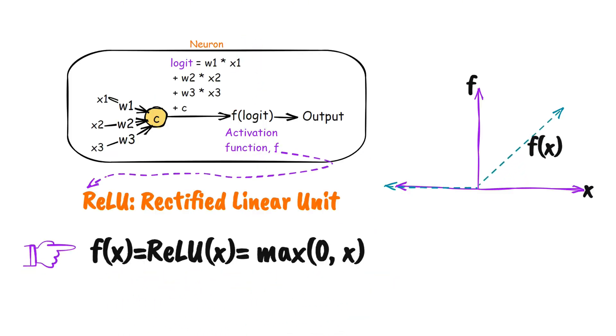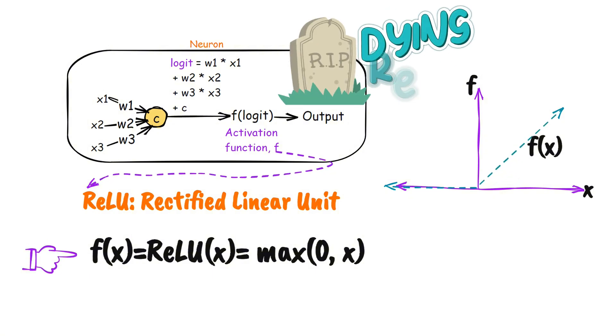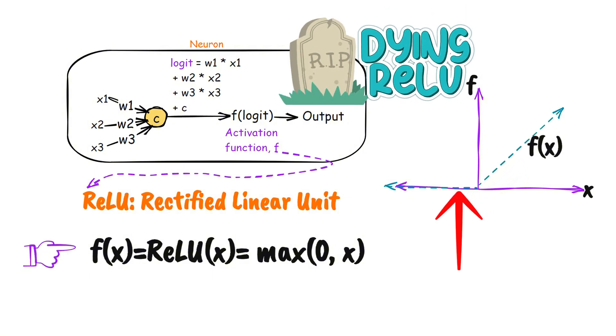ReLU also has a major drawback. It can suffer from dying ReLU problem. ReLU sets all negative input values to zero. If a neuron keeps receiving negative inputs, it could get stuck in this inactive state, outputting zero, which effectively means that it stops learning and becomes useless.